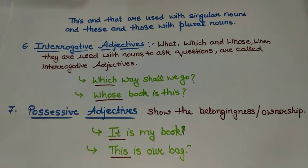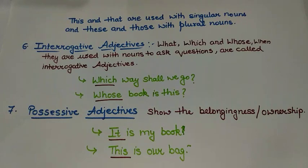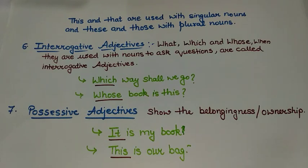The next adjective is interrogative adjectives. 'What,' 'which,' and 'whose' — when they are used with nouns to ask questions, they are called interrogative adjectives. We use a question mark with them. Like, 'Which way shall we go?' — I am making a question here. 'Whose book is this?' So these words are used as interrogative adjectives.